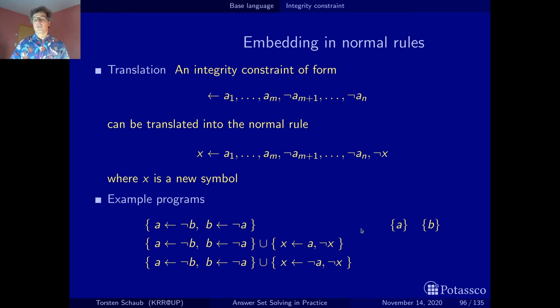Now look what happens. If a is true, this means that this positive body literal is satisfied, and then there is this odd loop left - x if not x - it destroys the stable model. This is not a candidate anymore, this candidate is not a stable model. On the other hand,